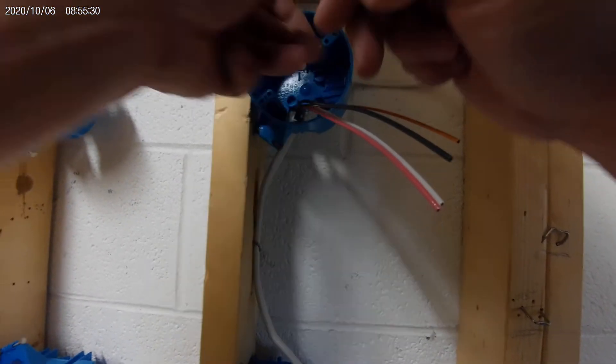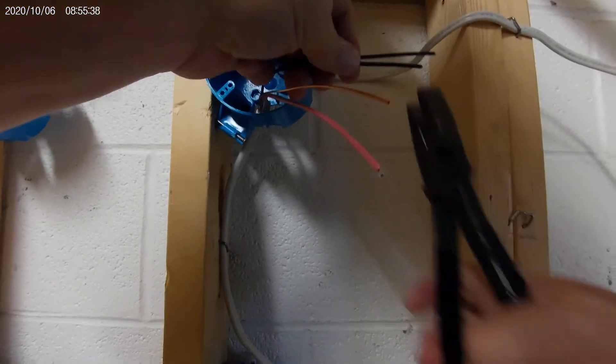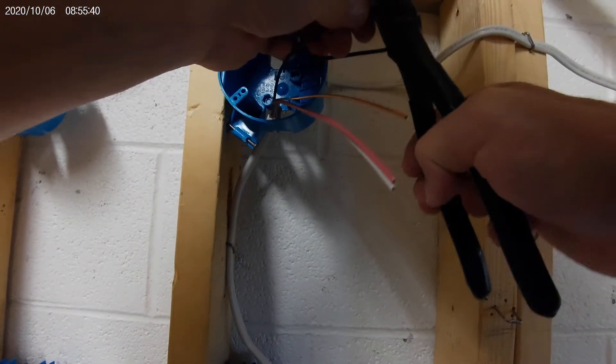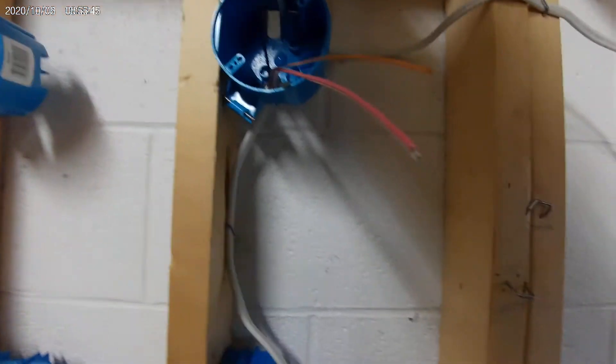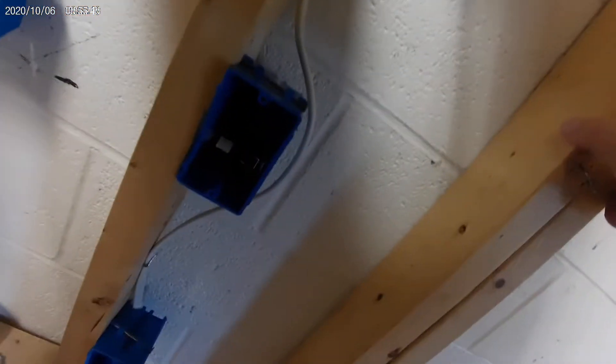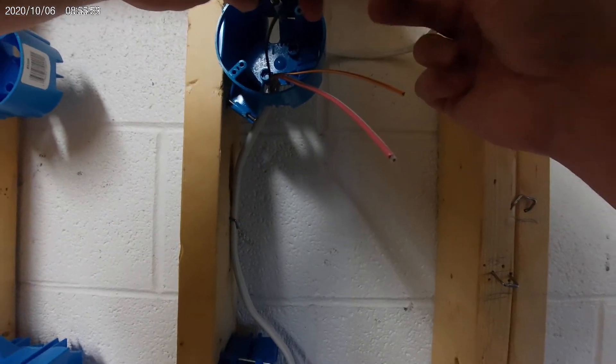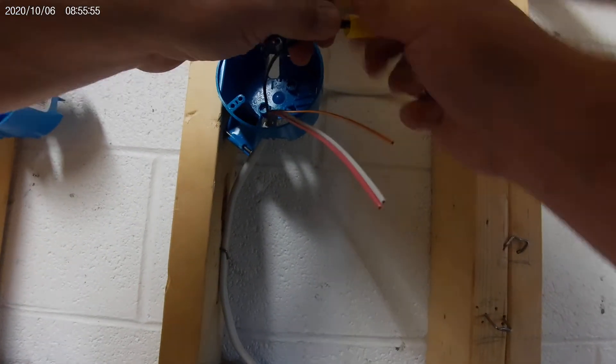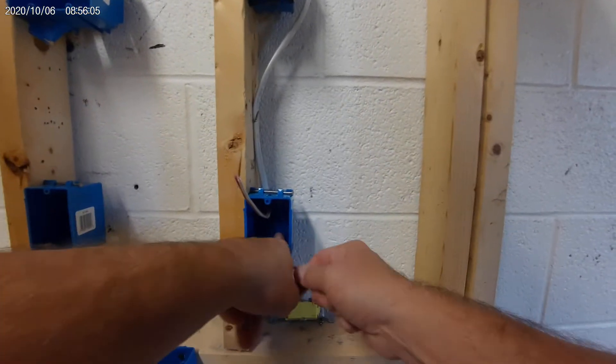My power comes in on a black wire. I am actually going to take this black wire, wire nut it, and take it back down to the switch. So now I've got power running down to the switch. So this black wire will have power on it.